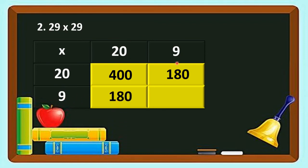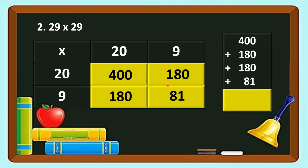Next is 9 multiplied by 9. What is the answer, students? Very good — 81. So now lastly we are going to add all these products to get our final product. So 400 plus 180 plus 180 plus 81. You are going to do the addition. So our answer is 841.